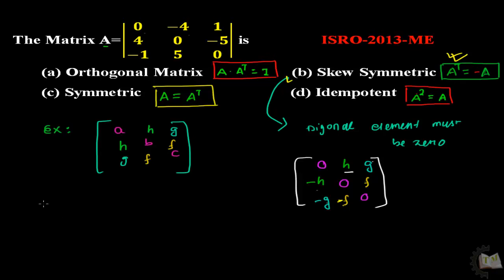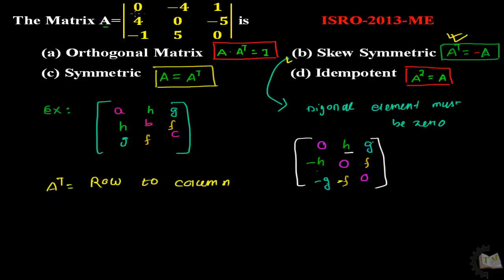This is the matrix. What would be the transpose? Transpose is nothing but changing row to column. The first row is 0, -4, 1. I will change it to a column. The second row is 4, 0, -5. I will change it to a column. The third row is -1, 5, 0.